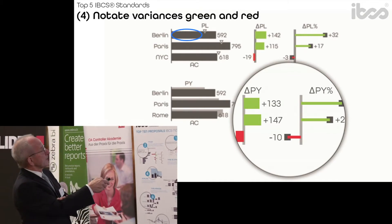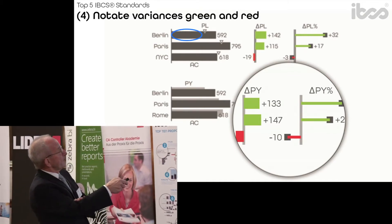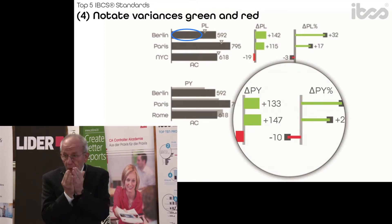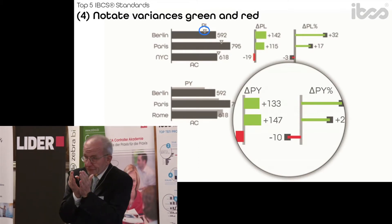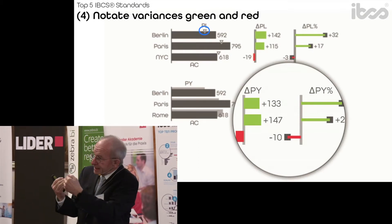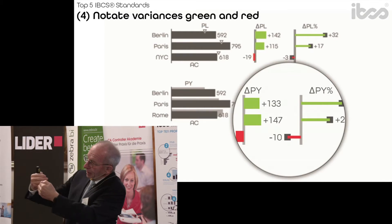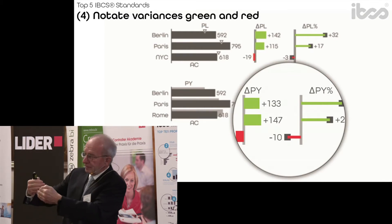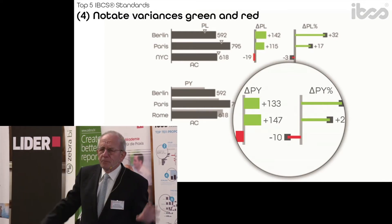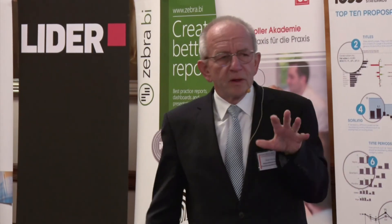Look at this one. This is actual and it's outlined — this little triangle. Because it's outlined, it means I compare it now to the plan value. It's very simple. Most things we report are either plan, actual, forecast, or budget — this kind of stuff.